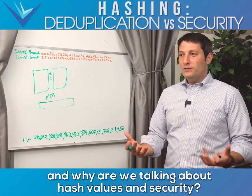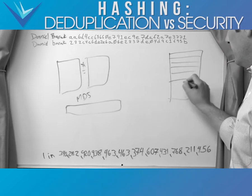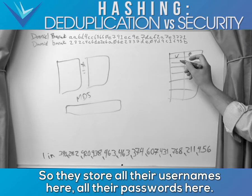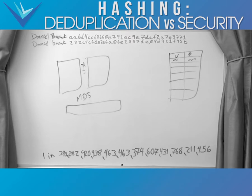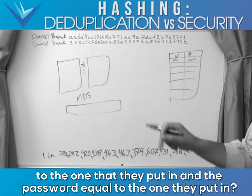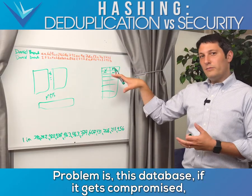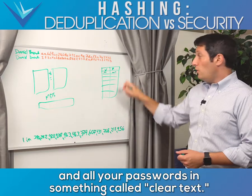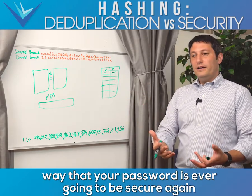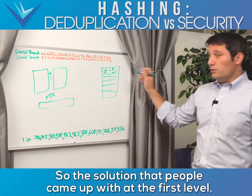When storing files in a database, you have username and password fields. It used to be that people stored passwords in clear text — when you entered your username and password, the system checked them directly. The problem is if that database is compromised, someone has a list of all your usernames and passwords in clear text. That means your password is completely unencrypted and there's no way it will ever be secure again — it gets dumped to the internet and you have a serious problem.